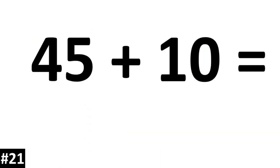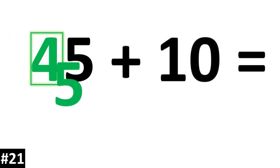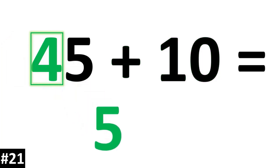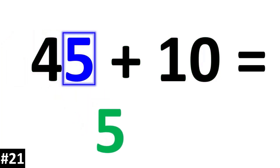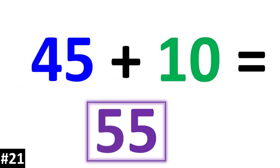45 plus 10: the tens digit of 45 is a 4. Going up by 1, it becomes a 5. The 5 as the ones digit stays the same. 45 plus 10 is 55.